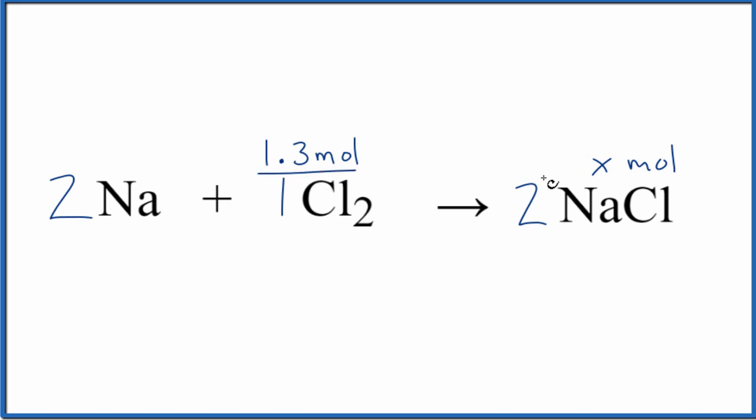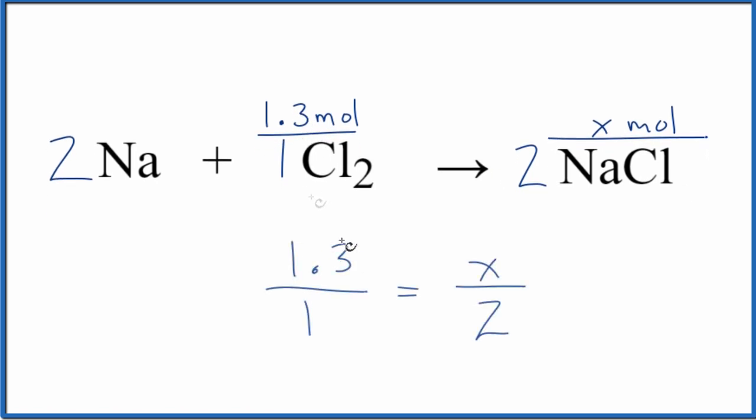The other way is you could just set up a ratio like this: 1.3 is to 1 as x is to 2. Cross multiply, we get x equals 2.6 moles, just like we did before. That's another way you could do this.